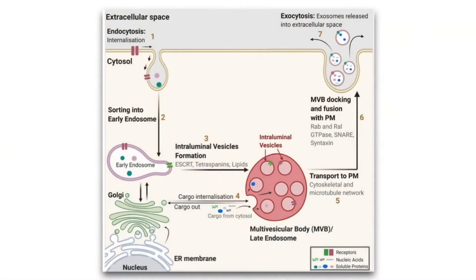I want to start this presentation by giving you an overview of the exosome biogenesis process. This is the simplest diagram I could find that truly delineates this quite well. If you look at the top left corner here, there's an invagination of the plasma membrane. What this does is encapsulate — it's basically taking a big gulp of the extracellular fluid as it invaginates inward into the cytosol — and that bud matures and becomes what they call an early endosome.